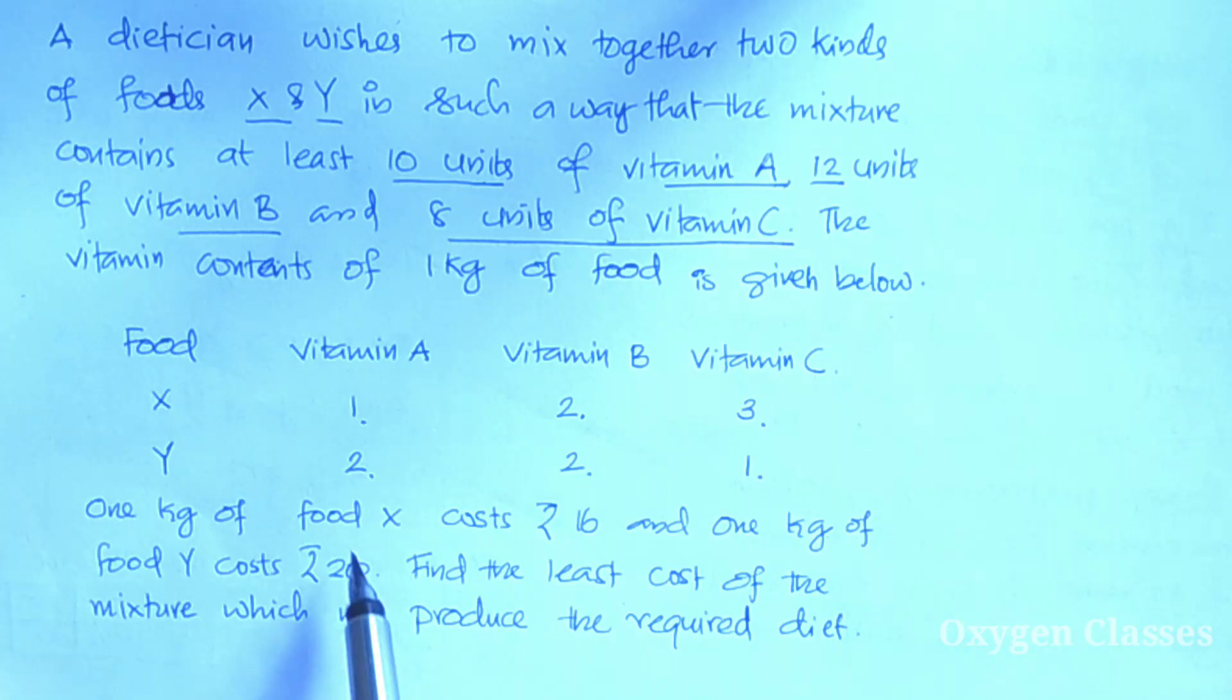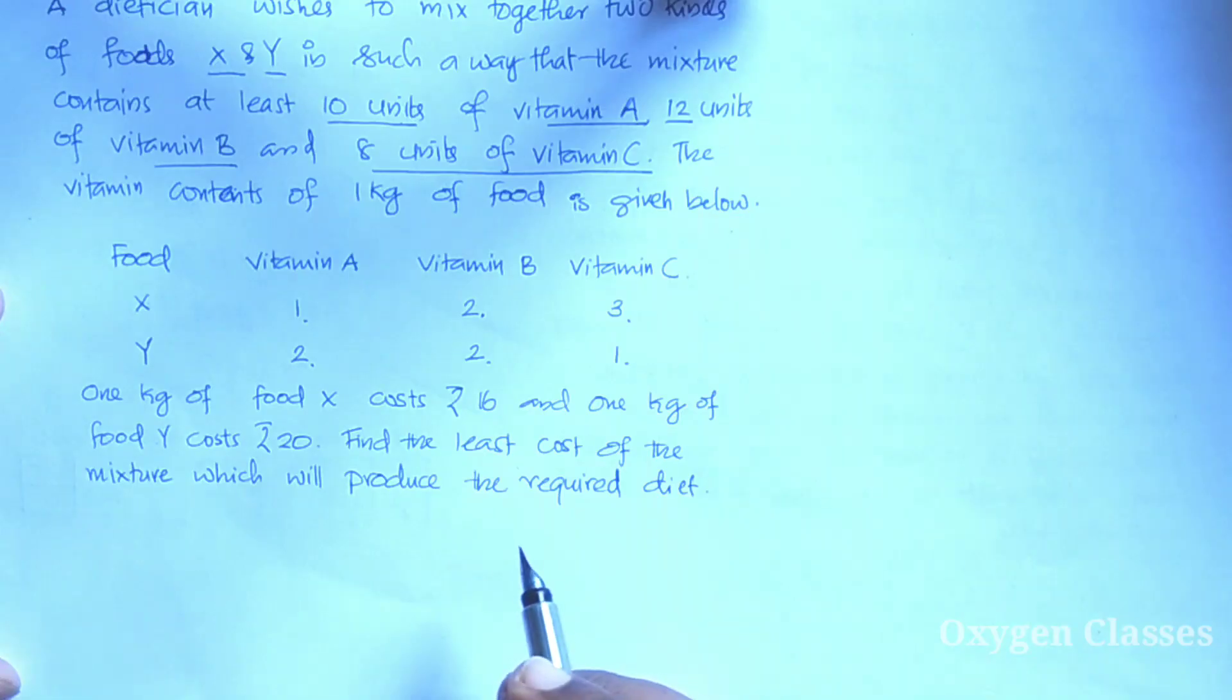One kilogram of food X costs 16 rupees and one kilogram of food Y costs 20 rupees. We need to find the least cost, the minimum cost of this diet.